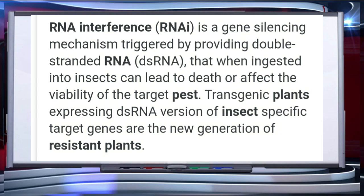RNA interference is a gene silencing mechanism triggered by providing double stranded RNA that, when ingested into insects, can lead to death or affect the viability of the target pest. Transgenic plants expressing double stranded RNA versions of insect specific target genes are the new generation of resistant plants.